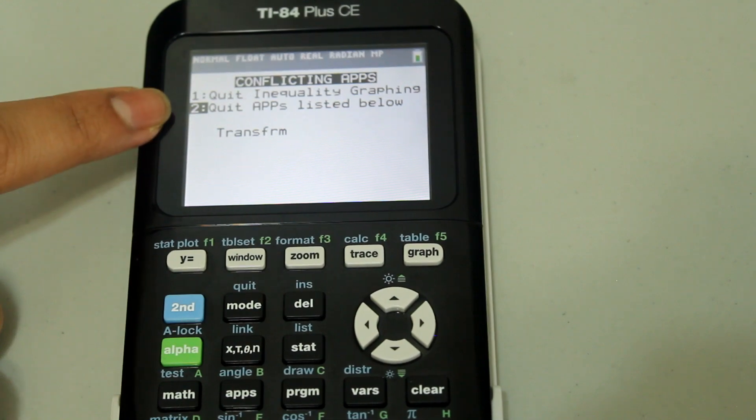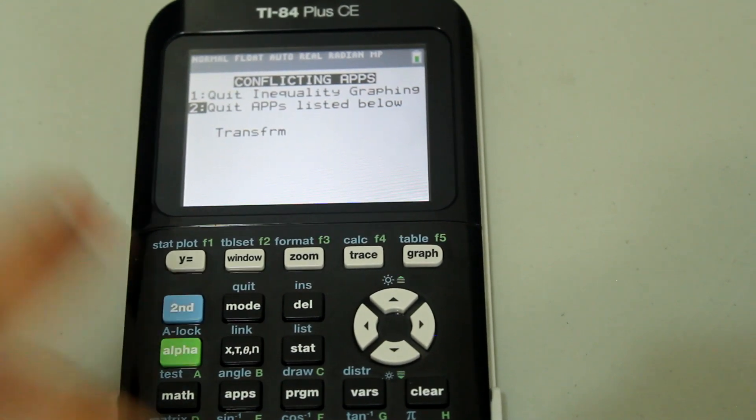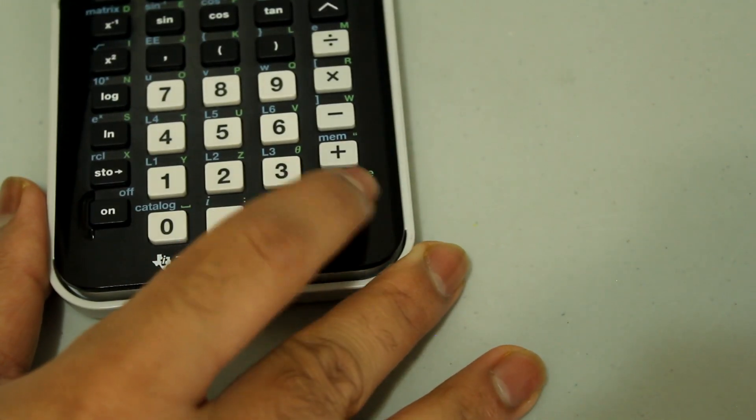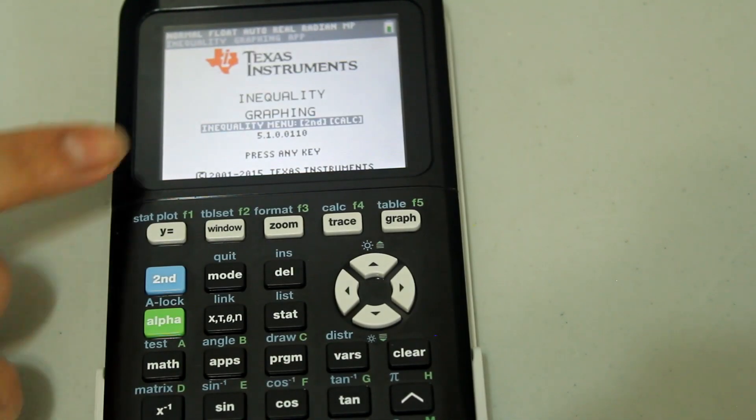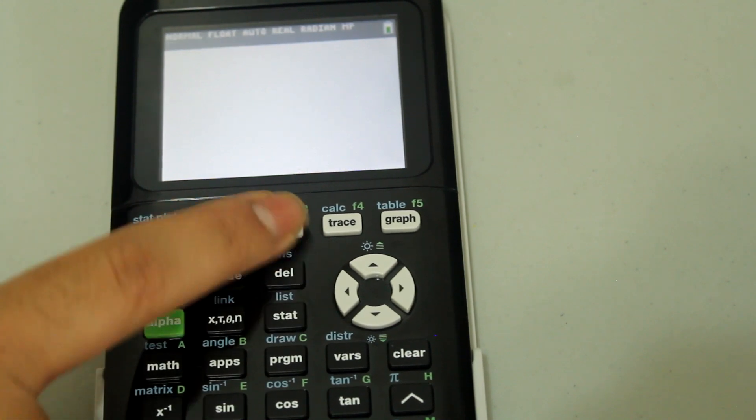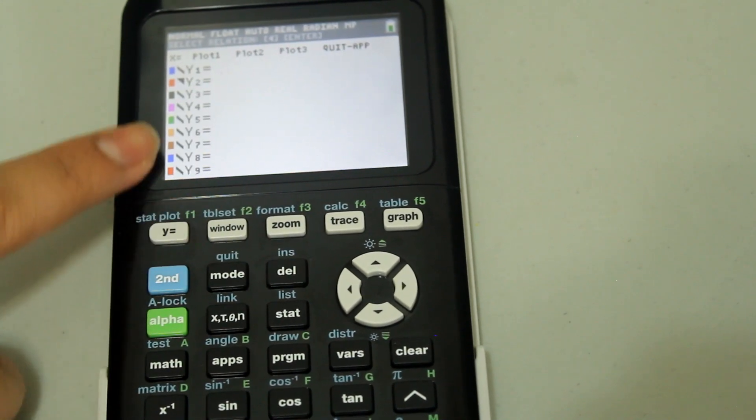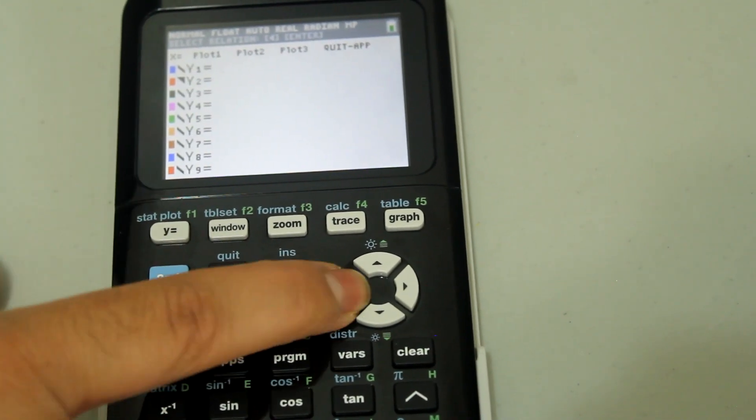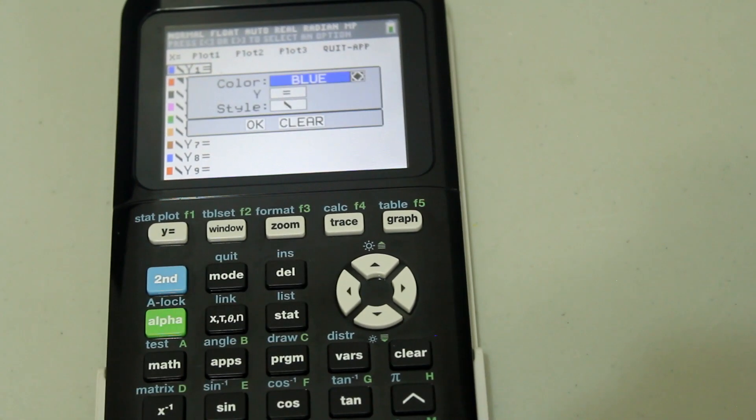So once the 2 is highlighted, hit enter. And then you'll get a screen that says press any key to continue. Just press any key to continue. And now if you go back to your y equals screen, you can graph the inequality.